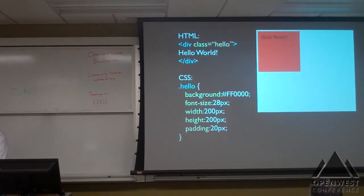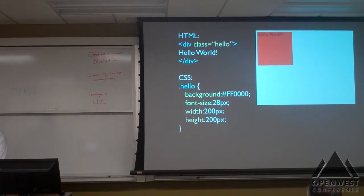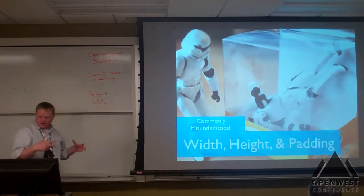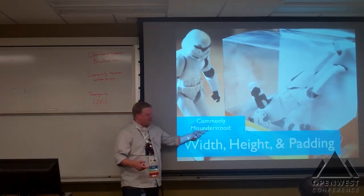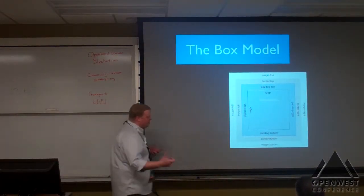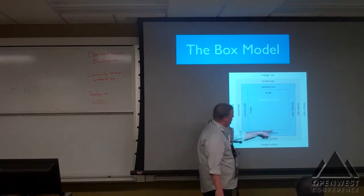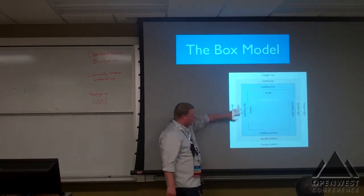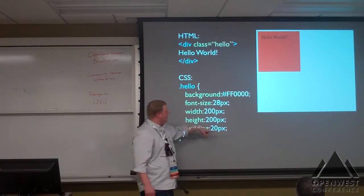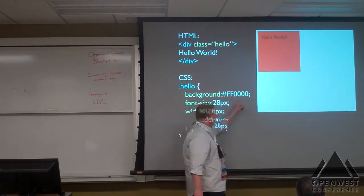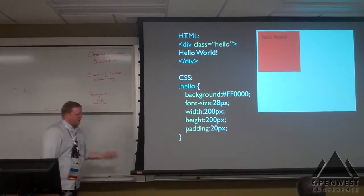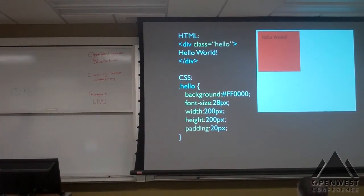When I do that, you'll notice my box gets bigger. One of the traditionally most misunderstood issues is width, height, and padding. The traditional box model will have the width, and then it will apply the padding, and then the border, and then the margin. It will apply the width of 200 pixels by 200 pixels, and then apply an additional 20 pixels on each side, which turns my box into 240 by 240. Same thing with border.